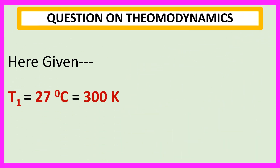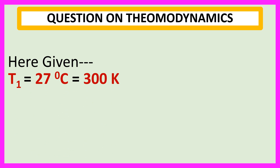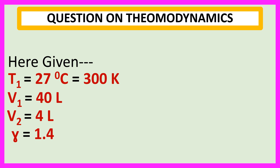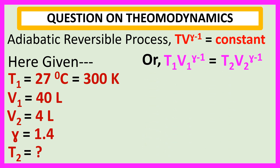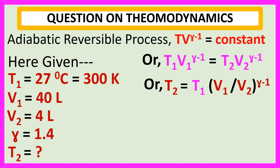Here, given: T1 is equal to 27 degree centigrade, which is equal to 300 Kelvin; V1 is equal to 40 liters; V2 is equal to 4 liters; gamma is equal to 1.4; and T2 we will calculate. We know in an adiabatic reversible process, T·V to the power gamma minus 1 is equal to constant, or T1·V1 to the power gamma minus 1 is equal to T2·V2 to the power gamma minus 1, or T2 is equal to T1 into V1 by V2 to the power gamma minus 1.